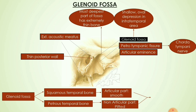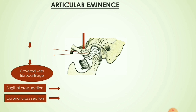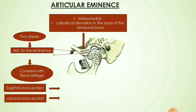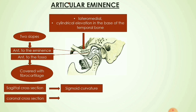The junction of the articular and non-articular parts helps in the insertion of the joint capsule. Moving on to the articular eminence — it is a lateral-medial cylindrical elevation at the base of the temporal bone. It has two slopes: the first is present anterior to the articular eminence, and the second slope, present anterior to the glenoid fossa (the posterior slope of the articular eminence), is covered with fibrocartilage. In sagittal cross-section, the articular eminence looks like a sigmoid curvature, whereas in coronal cross-section it appears concave mediolaterally.